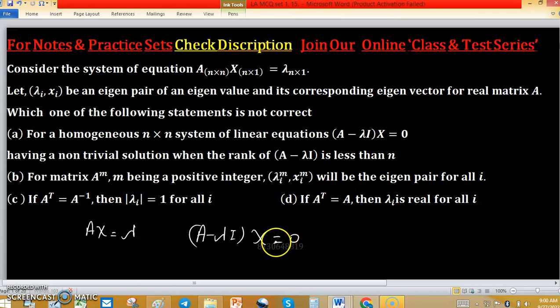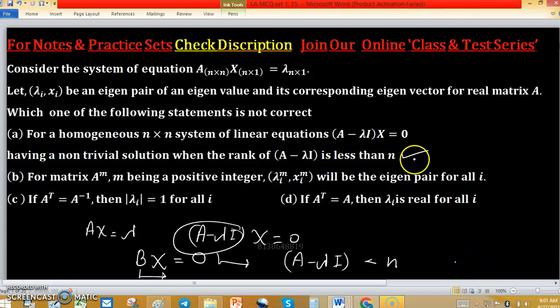This is a homogeneous system having non-trivial solution when rank of A minus lambda I is less than n. If you consider A minus lambda I as B, so we can consider Bx equals to 0. And this system having non-trivial solution when rank of B is less than n. If rank of B equals to n then system have unique solution. So this is a true statement.